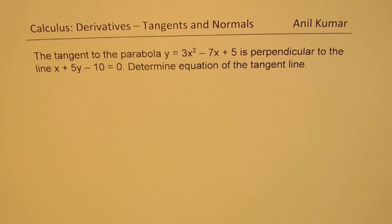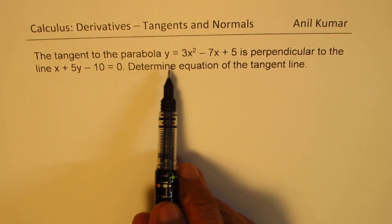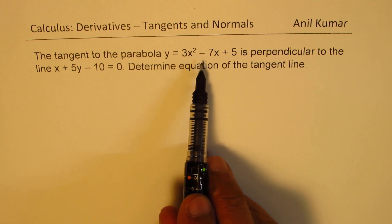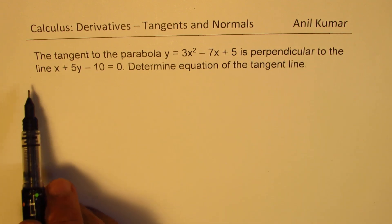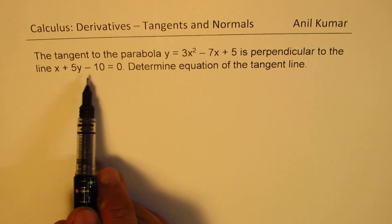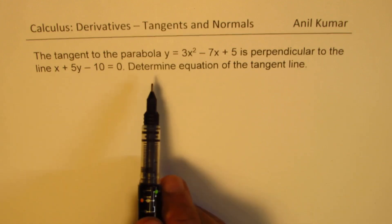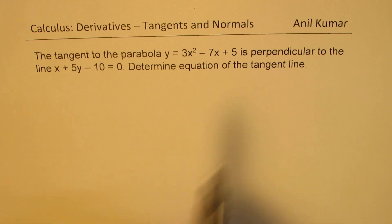The question here is, the tangent to the parabola y equals 3x squared minus 7x plus 5 is perpendicular to the line x plus 5y minus 10 equals 0. Determine equation of the tangent line.